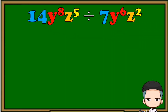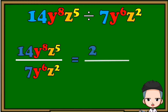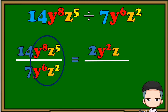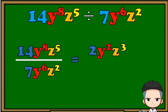For the last example: 14y raised to 8 z raised to 5 divided by 7y raised to 6 z squared. This is dividing polynomials with the same variables, but this time we have two common variables. Put them in fraction form and divide the numerical coefficients. Since all variables on the numerator and denominator are common, we divide them: copy variable y and subtract the exponents, copy variable z and subtract the exponents. Since there is no denominator remaining, we don't need to write it. The final answer is 2y squared z cubed.